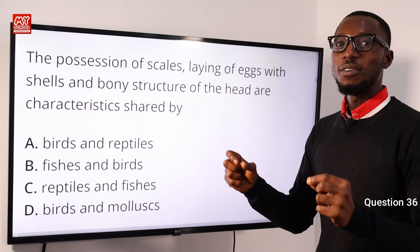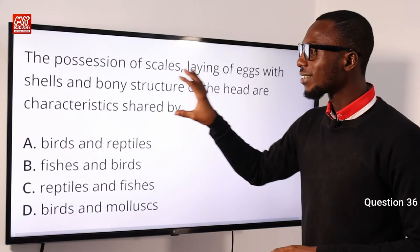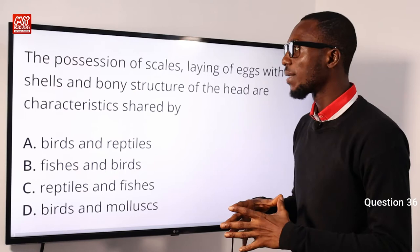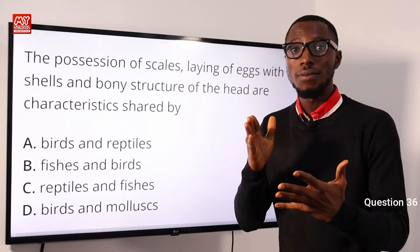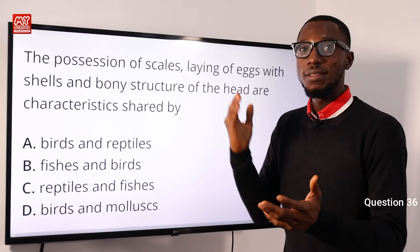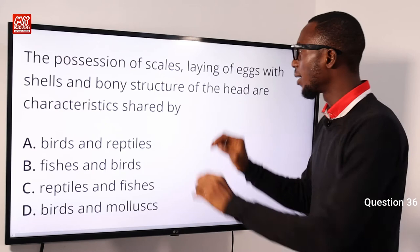Question 36: The possession of scales, laying of eggs with shells, and boning structure of the head are characteristics shared by which group of animals? We need to do a kind of screening process. The possession of scales — birds have scales, reptiles have scales, and fishes too have scales. So it is possible that birds, reptiles, and fishes are all candidates.